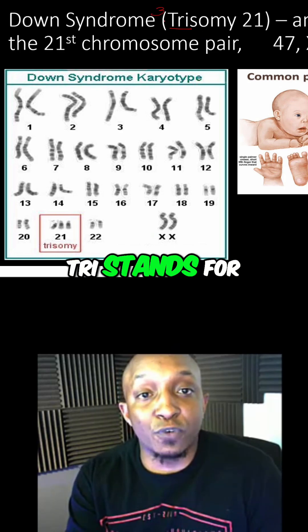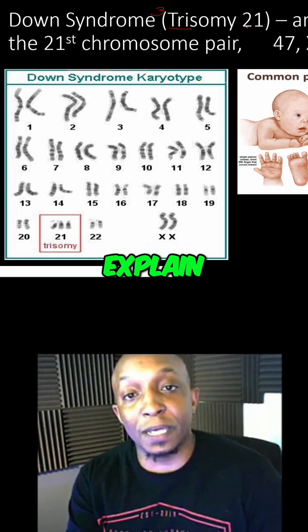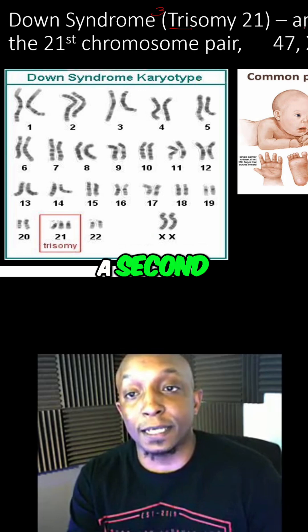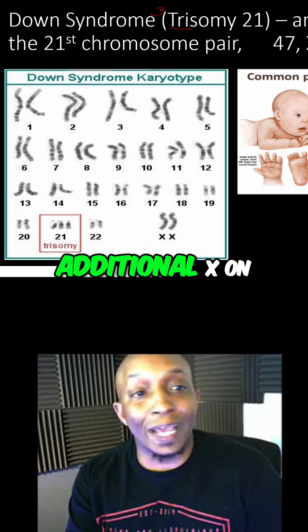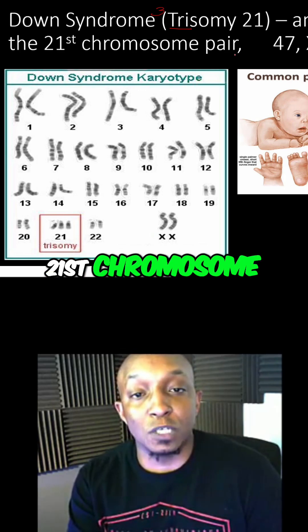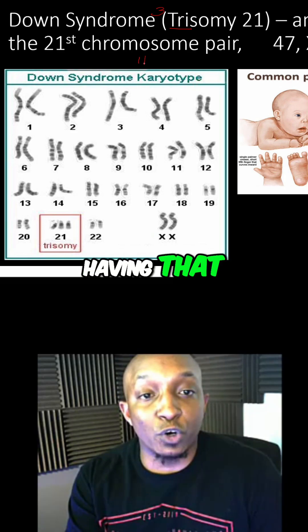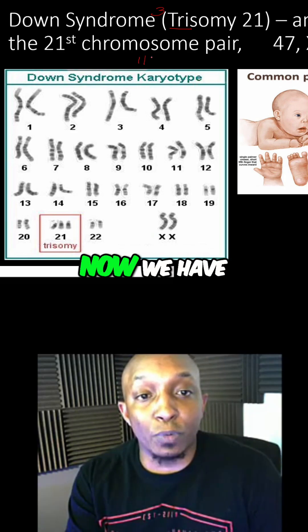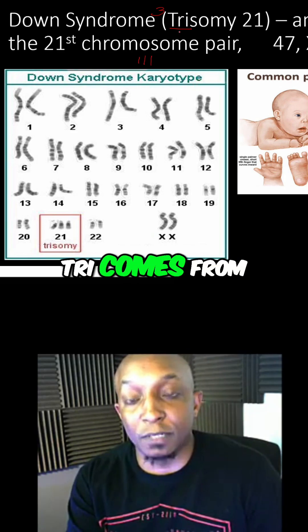Remember, 'tri' stands for the number three. It's an additional chromosome on the 21st chromosome pair. So instead of having the normal two, now we have three — and that's where that 'tri' comes from.